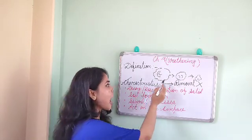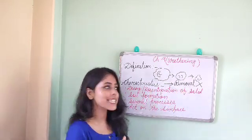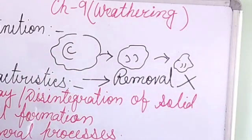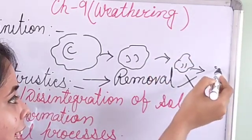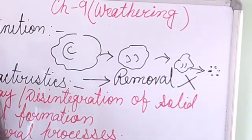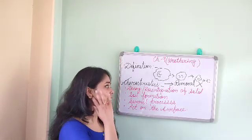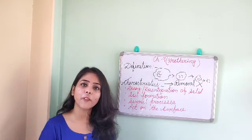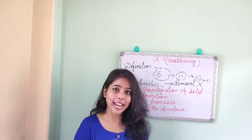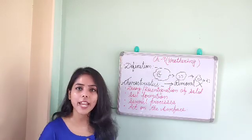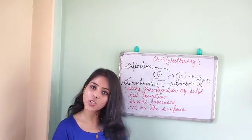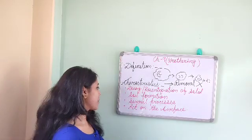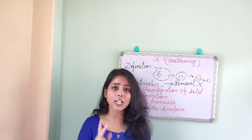The diagram shows how the size and structure of solid particles changes. If the process continues, the small rock will be disintegrated into tiny particles. When these fine particles mix with decayed plant and animal matter — that is, humus — they create soil. So weathering is the process responsible for the formation of soil.